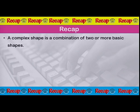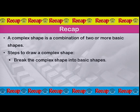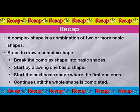This was a short video to demonstrate how to draw complex shapes using the Logo programming language. You can follow the same procedure to draw other complex shapes by breaking them down into simple shapes. In today's lesson, we learnt that a complex shape is a combination of two or more basic shapes. The steps to draw a complex shape are: break the complex shape into basic shapes, start by drawing one basic shape, start the next basic shape where the first one ends, and continue until the whole shape is completed.